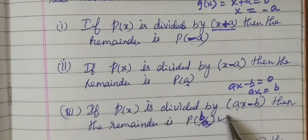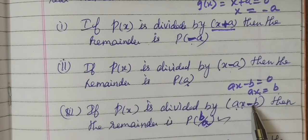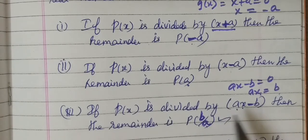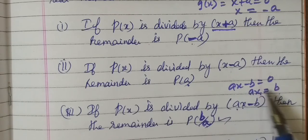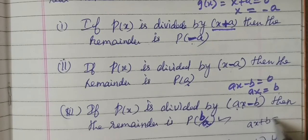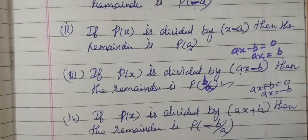Step 2: If p(x) is divided by ax minus b, then the remainder is p(b/a). Step 3: If p(x) is divided by ax plus b, then ax plus b equals 0, so x equals minus b by a, and the remainder is p(-b/a). So there are 4 steps in total.